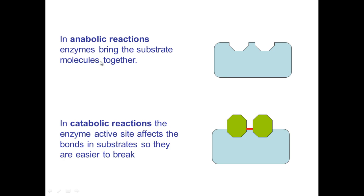From last time, we looked at a few key terms. In an anabolic reaction, enzymes are used to bring substrate molecules together to form bonds between them. In a catabolic one, they do the opposite, so they break bonds between molecules and are used to break things down.